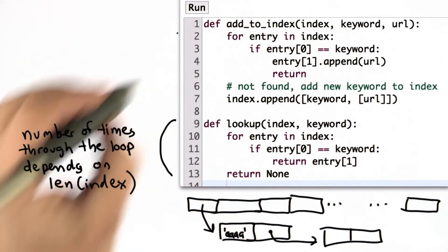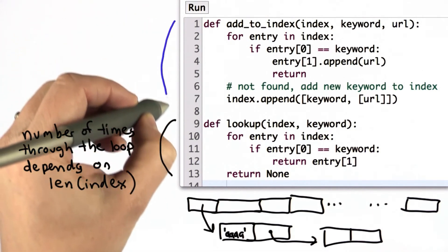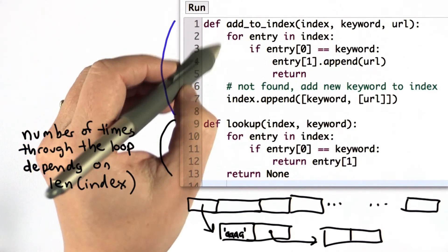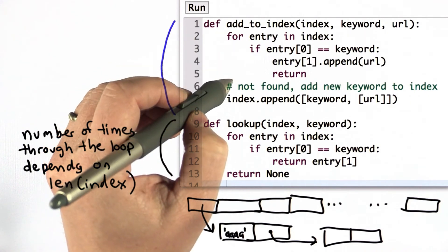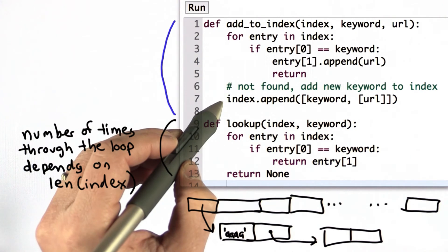The other code that you see here that's relevant to this is the code for add to index. And the reason that's relevant is we want to know what the structure of the index is after we made our big index. And what add to index does is also loop through all the entries to find if one already exists, then it adds that URL. If one doesn't exist, it adds the new entry at the end.